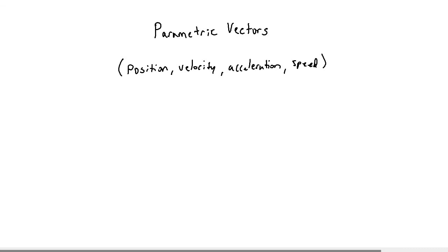Let's take a look at parametric vectors that deal with position, velocity, acceleration, and speed. Recall that in Calculus 1 you may have had to look at particle motion and how position relates to velocity, acceleration, and speed.